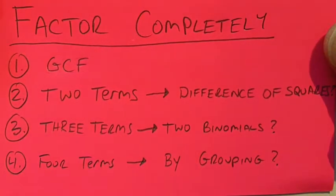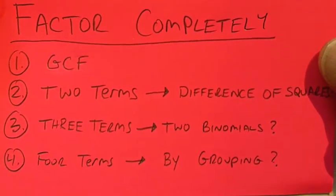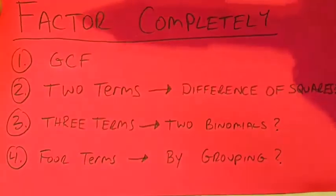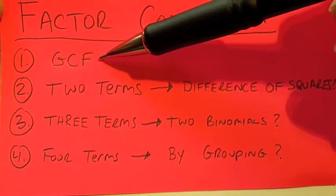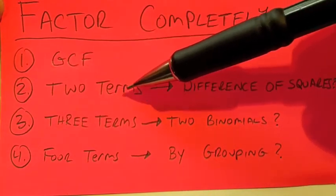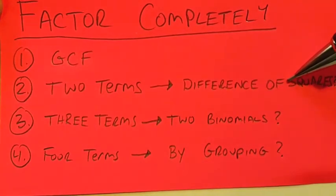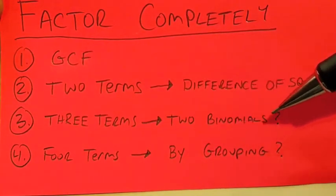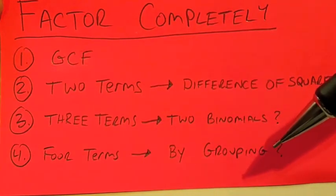The first thing we always do is see if we can factor out the greatest common factor. Once we have the greatest common factor factored out, then we want to determine how many terms we have, and that's going to guide our factoring after that. If we have two terms, we check for a difference of squares. Three terms, we factor into two binomials. Four terms, we factor by grouping.